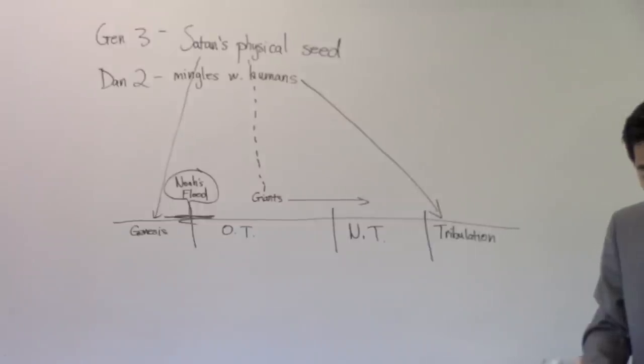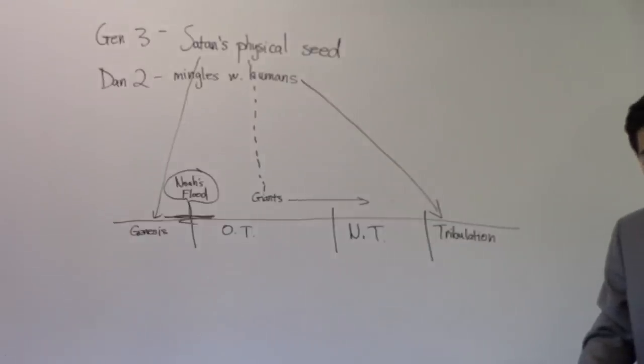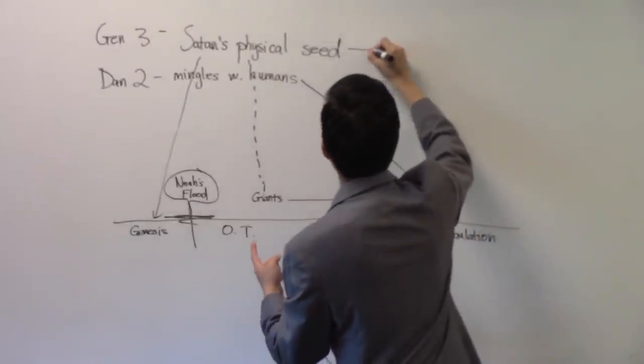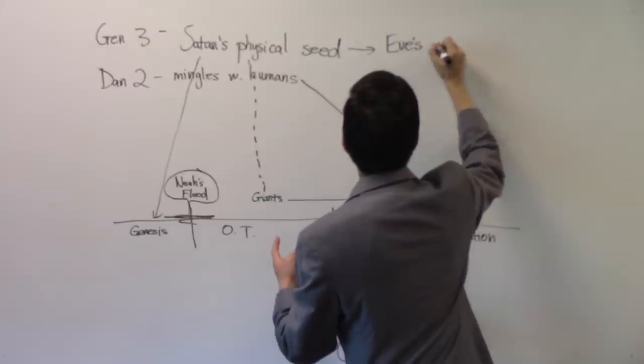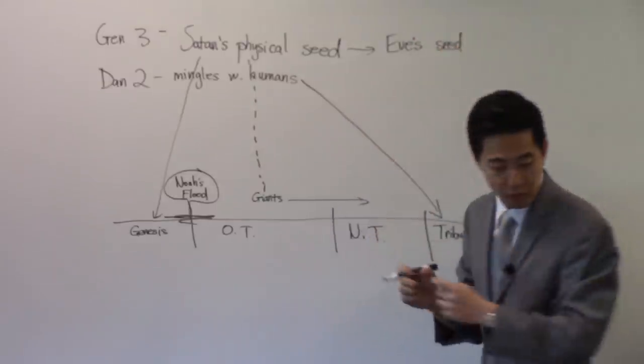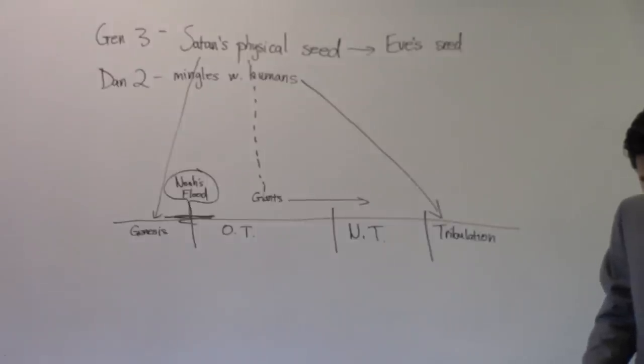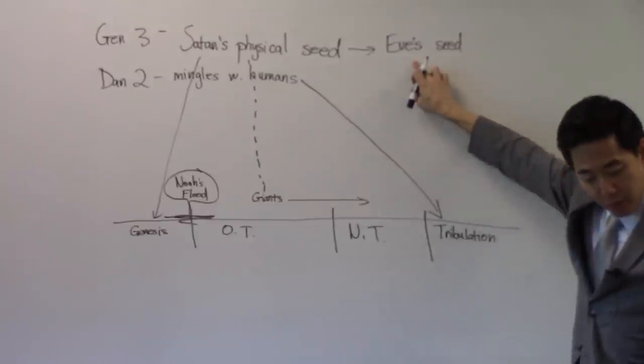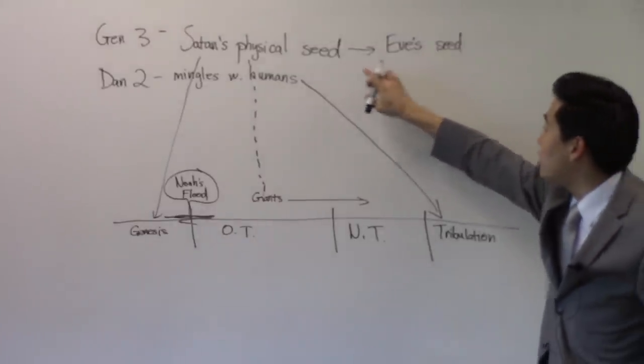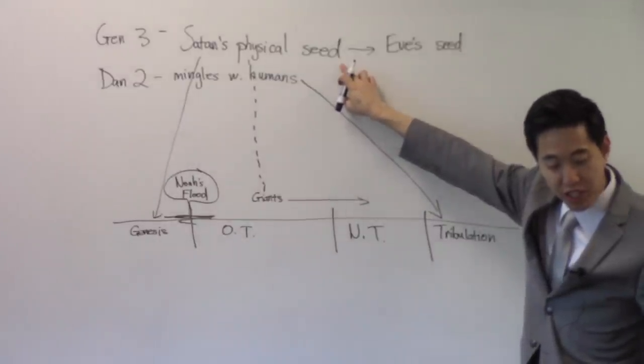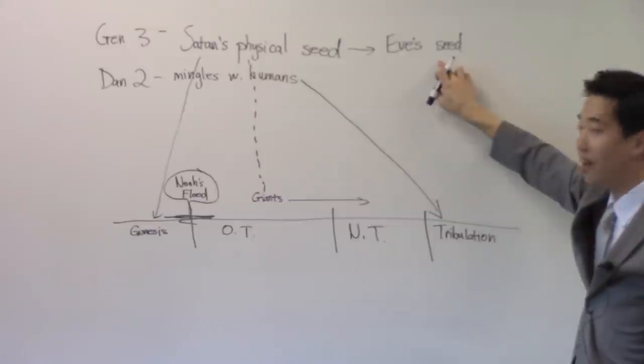We're going to Genesis chapter 3 and we will read verse 15. And I will put enmity between thee and the woman. So God is speaking to the serpent, Satan. You and woman. There are two different seeds that's contrasted here. His seed versus Eve's seed. Between thee and the woman, between thy seed and her seed. Satan's seed and Eve's seed. It shall bruise thy head. So Eve's seed is going to bruise the seed of Satan. And thou shalt bruise his heel. But Satan can only bruise the heel of Eve's seed.